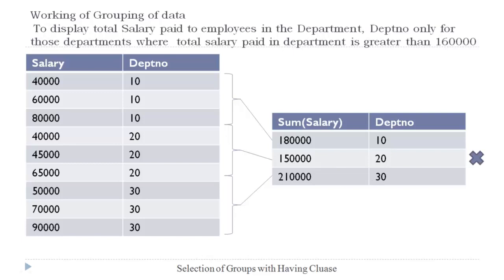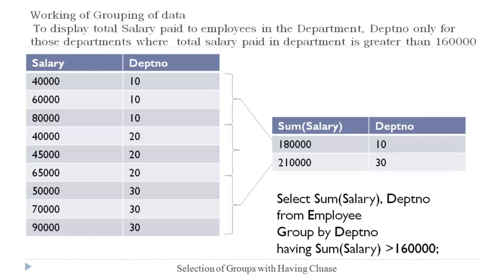In order to discard the groups that don't meet this condition, we have to use the HAVING clause of the SELECT statement. So the final query to display the desired output will be: SELECT SUM(salary), department_number FROM employee GROUP BY department_number HAVING SUM(salary) > 1,60,000. It only shows those department numbers which have a total salary more than this value.